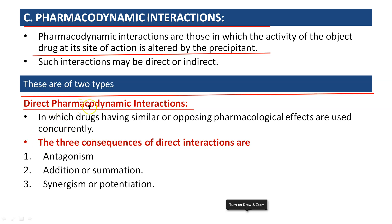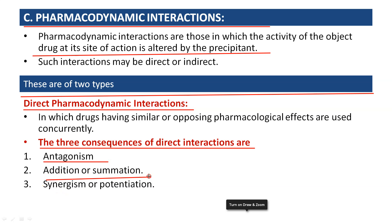Under direct pharmacodynamic interactions, drugs have similar or opposing pharmacological effects when used concurrently. The effects may be similar or opposing — one drug may oppose the effect of the other. There are three consequences of direct interactions: antagonism, addition or summation, and synergism or potentiation.